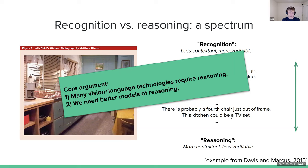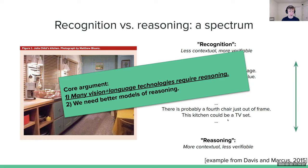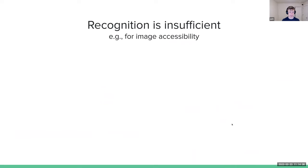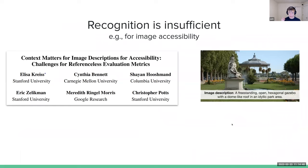Let's jump into the first part of the argument: many vision and language technologies require reasoning. You might think 'we'll just run an object detector, that's probably enough' — I'm here to make you think twice about that. This is a really cool study from Christ et al. considering image accessibility — making web images more accessible to low vision and blind users through automatic captioning.